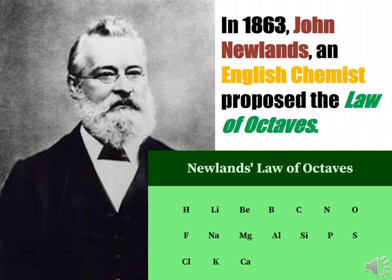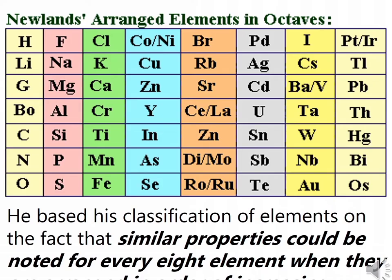In 1863, John Newlands, an English chemist, proposed the law of octaves. He based his classification of elements on the fact that similar properties could be noted for every eighth element when they are arranged in order of increasing atomic masses.